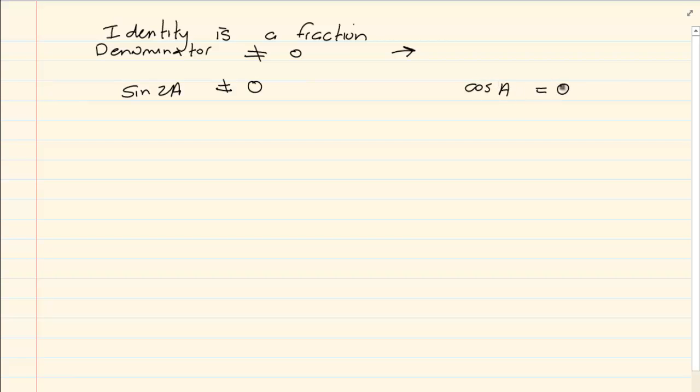When doing restrictions, all you have to remember is to work with the denominators. Sometimes even if you are given the identity and you can't completely solve it, you can still do the restrictions.